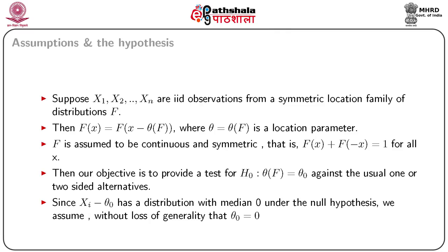Symmetry implies a symmetric density and probability content above and below the point of symmetry are the same. Under symmetry, xi minus theta and theta minus xi have the same distribution for each i, and hence theta in this case is the median of f. Our objective is to provide a test for theta equal to theta-naught against the usual one or two-sided alternatives.